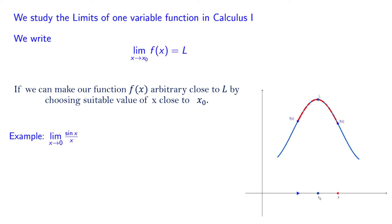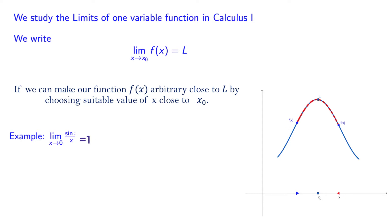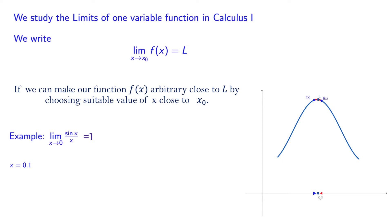But as x gets very very close to 0, that quotient sin(x) over x gets closer and closer to 1. Let's verify this by picking values near 0. For example, x = 0.1, which is close to 0. When I plug this into sin(x)/x, this gives me 0.998, a number close to 1.